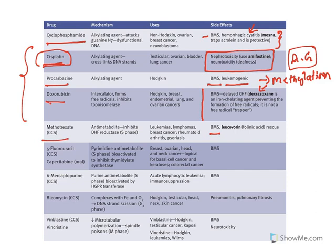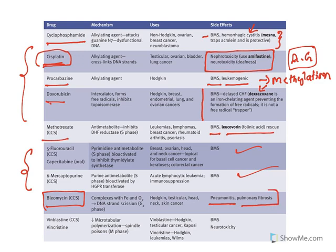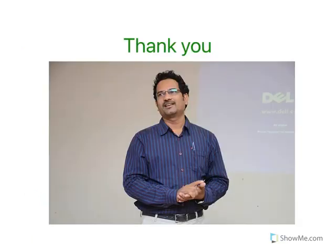Methotrexate causes bone marrow suppression — leucovorin rescue is used. 5-Fluorouracil and mercaptopurine, both anti-metabolites, have bone marrow suppression as the major problem. Bleomycin is different — it can cause pneumonitis and pulmonary fibrosis (lung damage). Vincristine and vinblastine both cause bone marrow suppression as well as neurotoxicity. These are all the important points related to cytotoxic antineoplastic drugs.